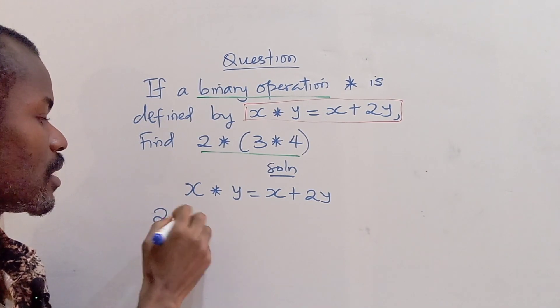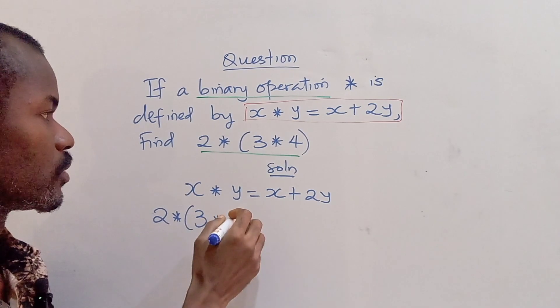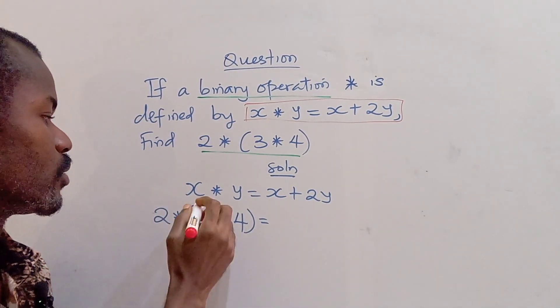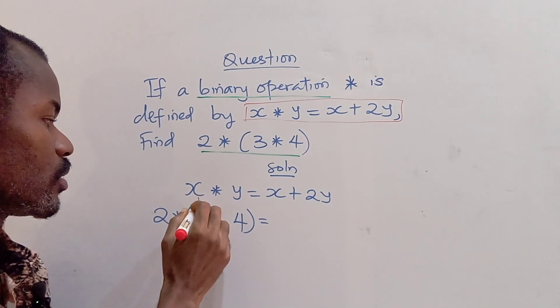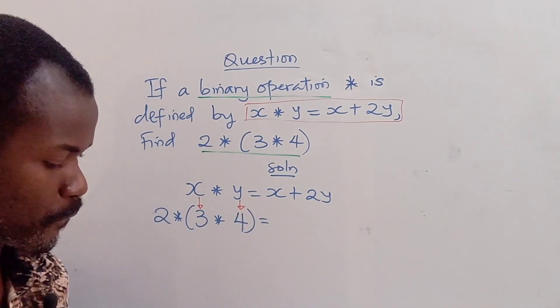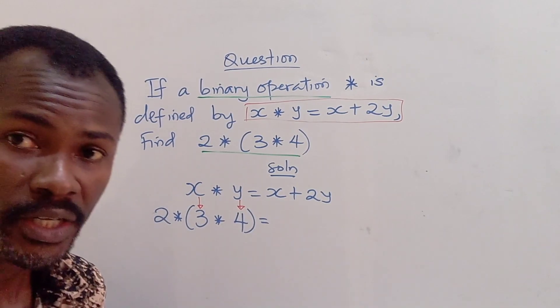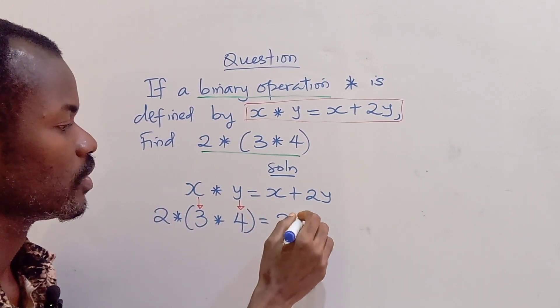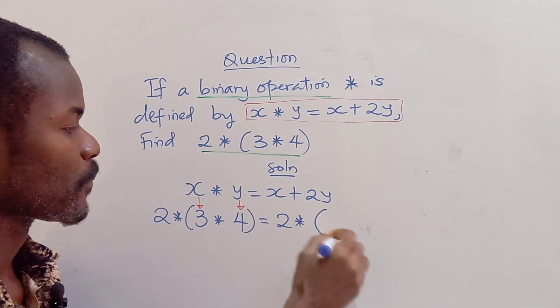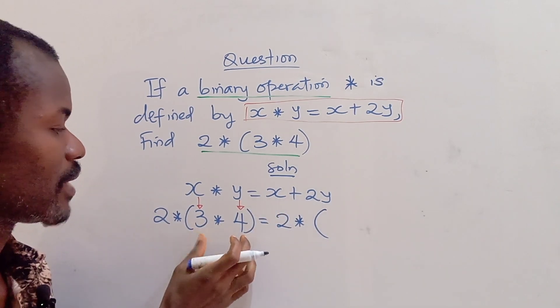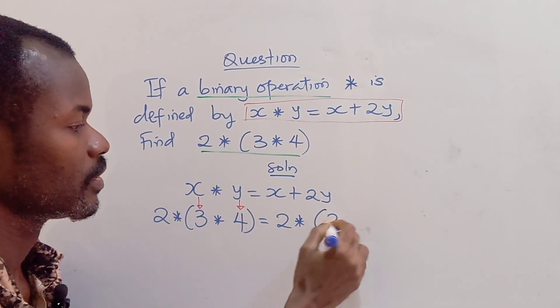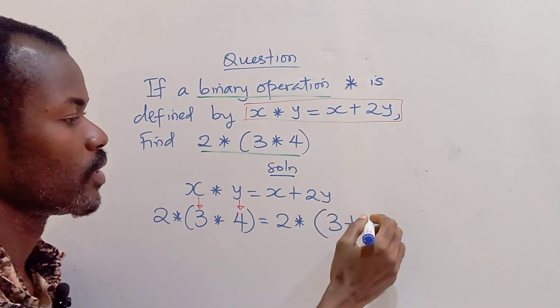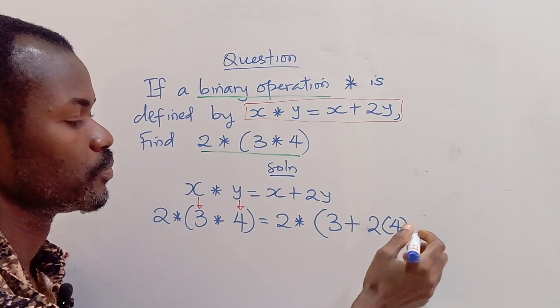Now for this operation, we want to work on the bracket first. Remember I have 2 asterisk (3 asterisk 4), so what it means is that you are going to input x as 3 and y as 4. Since we are working on the bracket first, we want to keep 2 asterisk separate. So x is going to be 3 plus 2 times y, which is 2 times 4.